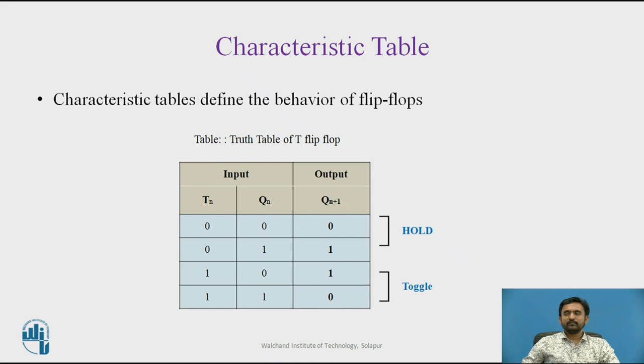Characteristic table defines the behavior of flip-flops. The characteristic table is useful during the analysis of sequential circuits when the value of flip-flop inputs are known. The next state for the T flip-flop is same as the present state Q if T equals 0 and complemented if T equals 1.